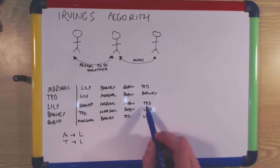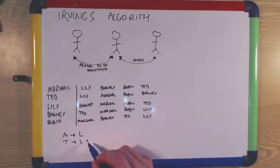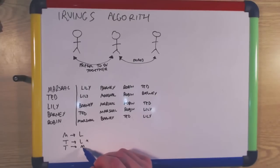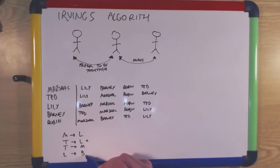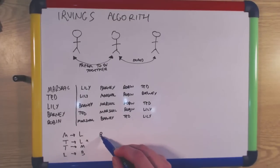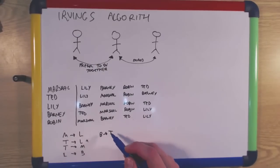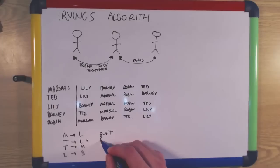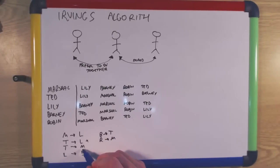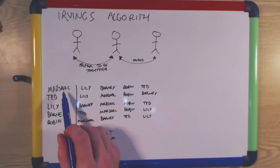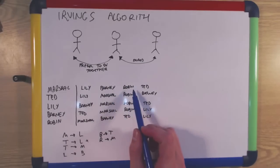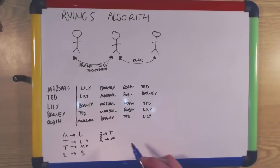Ted then proposes to Lily, but because Lily has already been proposed to, she looks at her preference list. Marshall is more preferable than Ted so this proposal is rejected. Ted moves on to proposing to Marshall, who hasn't been proposed to before, so this proposal is accepted. Lily proposes to Barney; Barney hasn't received a proposal before so this is accepted. Barney proposes to Ted and since Ted hasn't received any proposals he too accepts. Robin proposes to Marshall, but Marshall had already been proposed to by Ted. Looking at Marshall's preference list, Robin is a higher preference than Ted, so Ted's proposal to Marshall is rejected and Marshall accepts Robin's proposal instead.